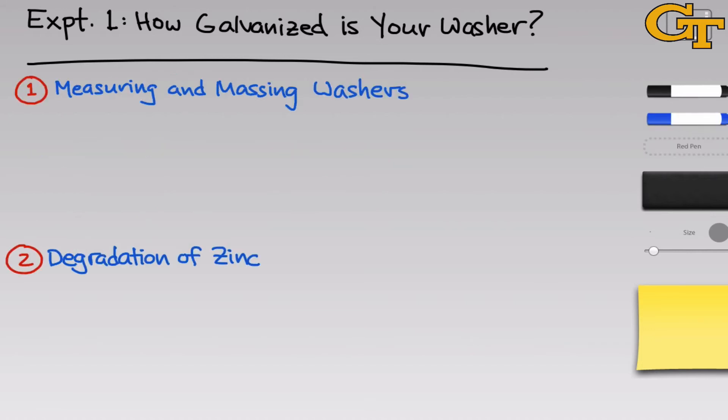In part A of the experiment, we'll do two separate things. First, we'll measure and mass washers. And then in the second part of part A, we will degrade the zinc on the washers and mass them before and after to determine the mass of zinc present on the washer.